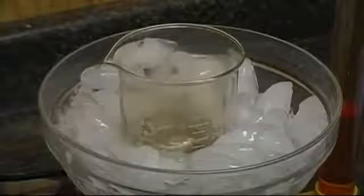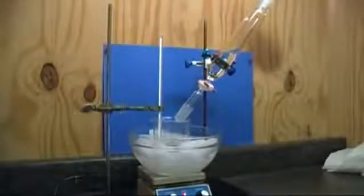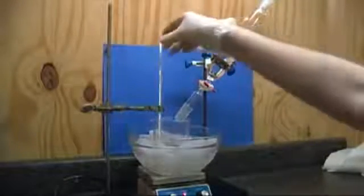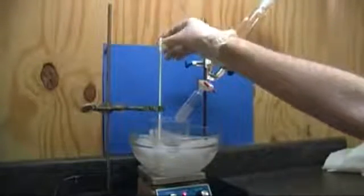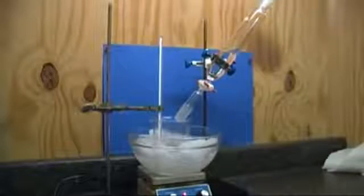The nitronium ion will act as our electrophile in our reaction. Once all the acids are mixed and have cooled down, you can begin to add the benzene. Place 60 milliliters of benzene in a sep funnel and set it up to begin dripping the benzene into the acid.